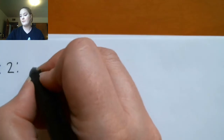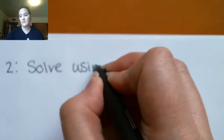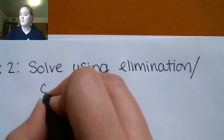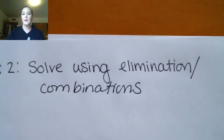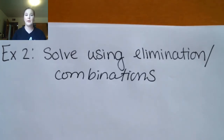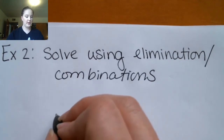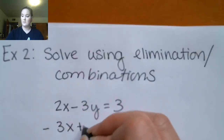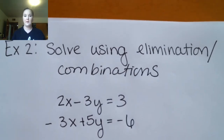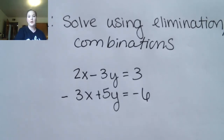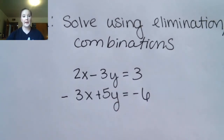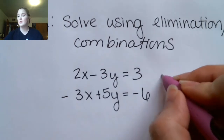Let's see an example of the other method to solve algebraically. This method is sometimes called elimination, and sometimes called combinations — both names refer to the same method. Here we're going to try to line up so that either x or y has coefficients that are opposites. For example, four and negative four are opposites, and we can achieve that by multiplying by a constant.